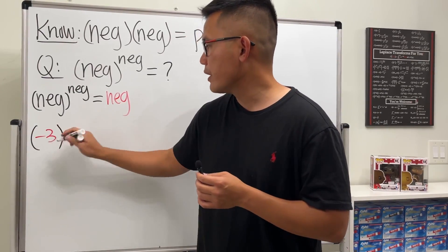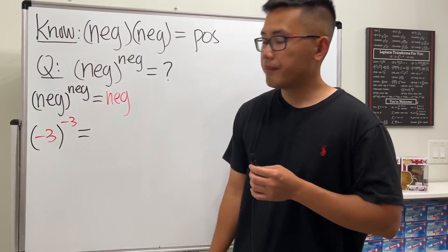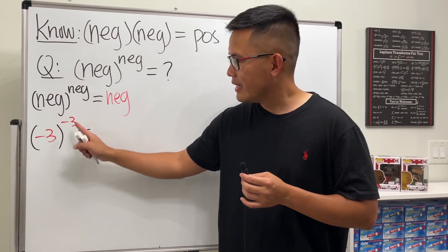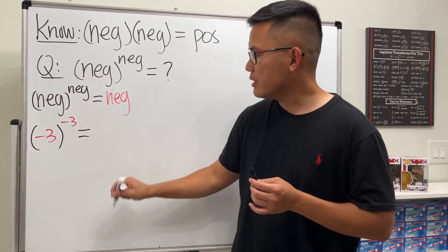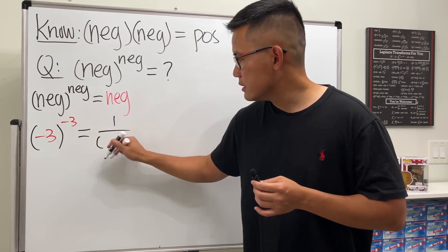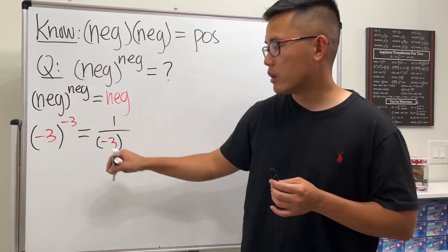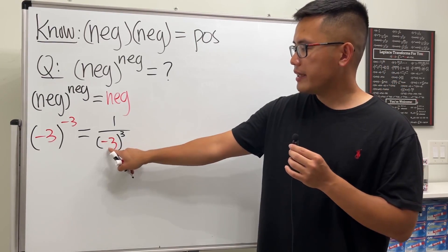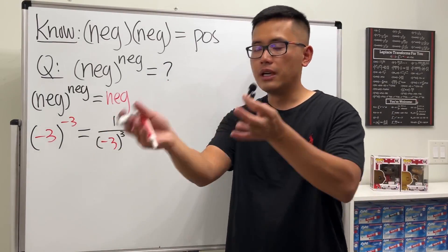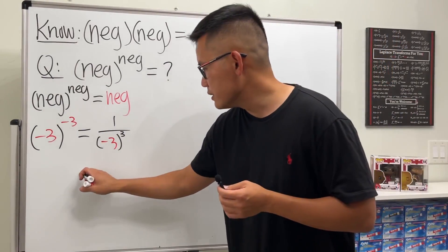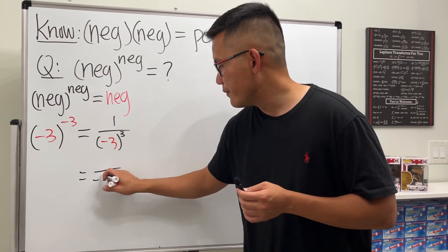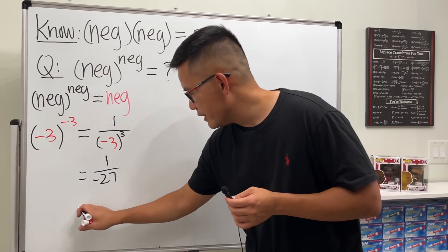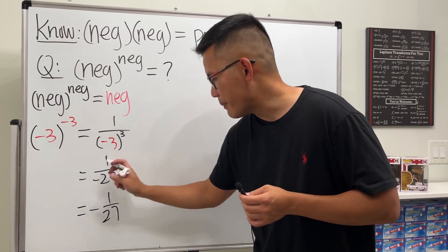Let's say we have negative three raised to a negative three. Take care of the negative exponent first — bring it down to the denominator, so we have one over negative three to the positive three power. Negative three to the third power is negative three times negative three times negative three, which is negative 27 on the bottom, and we still have the one on top.